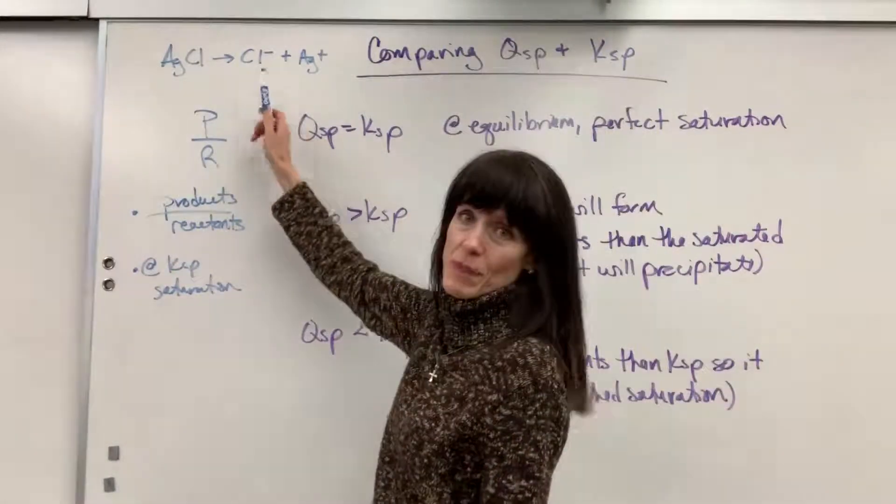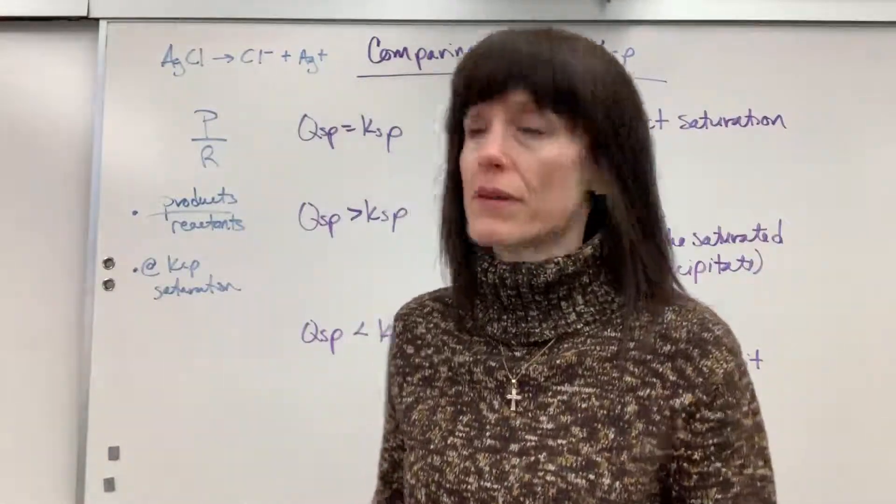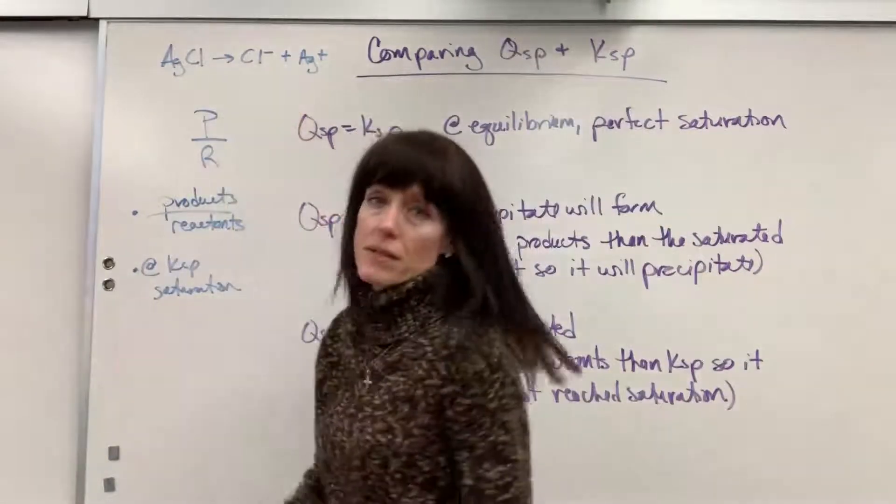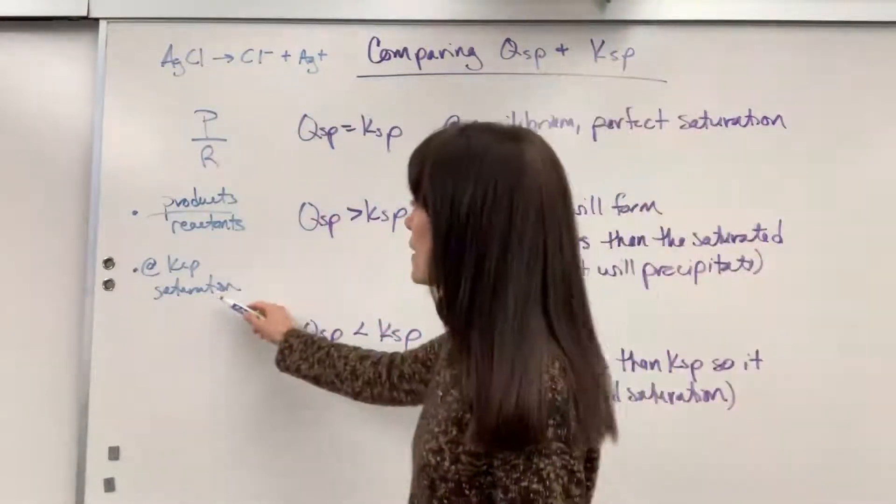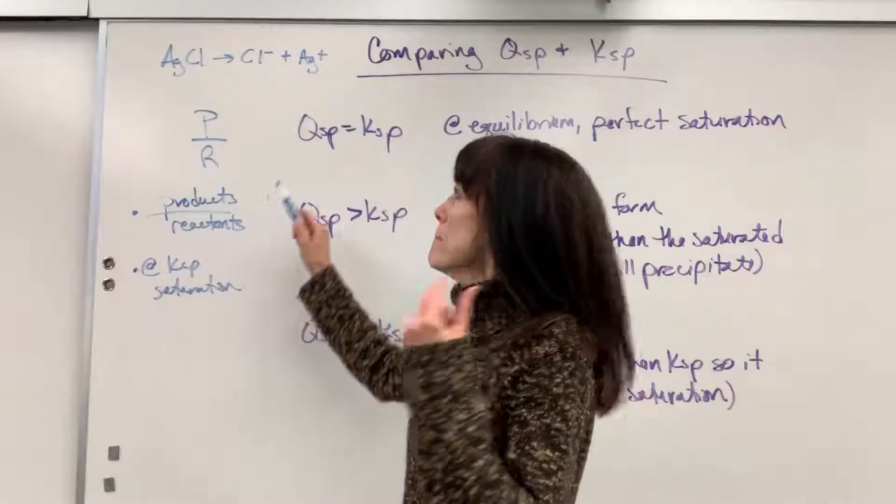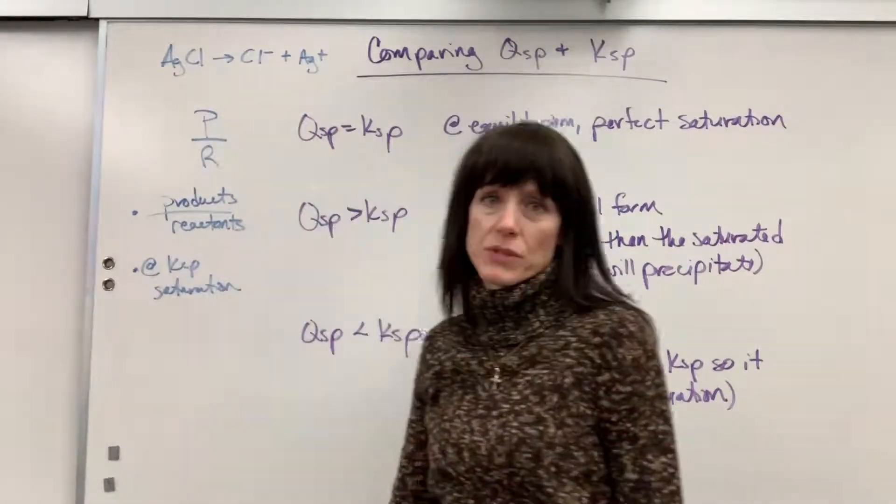They barely break apart. I mean, if I have a tiny KSP, like 10 to the minus 10 or something, which means way reactant favored, very few ions dissociate. They break apart. So remember, at KSP, maximum number of ions have dissociated.